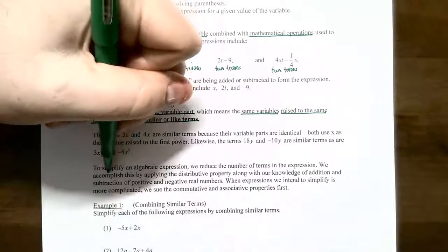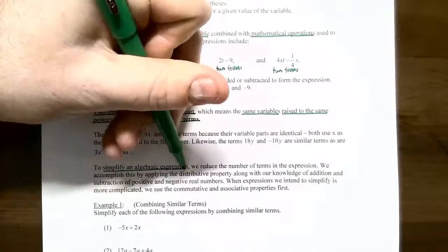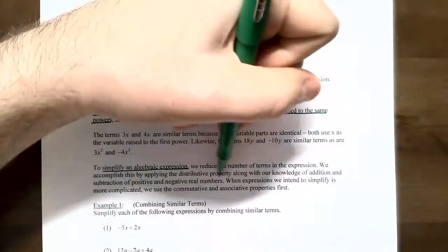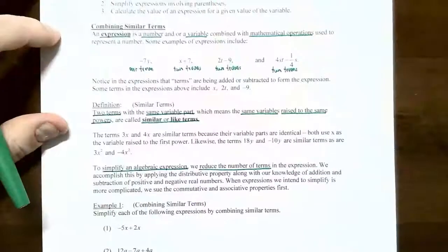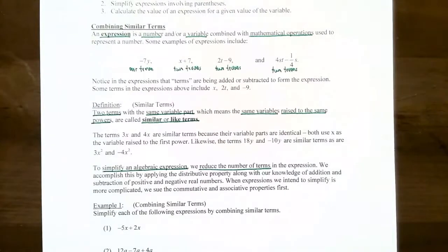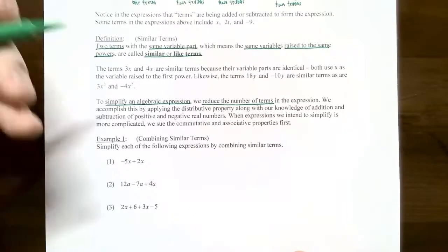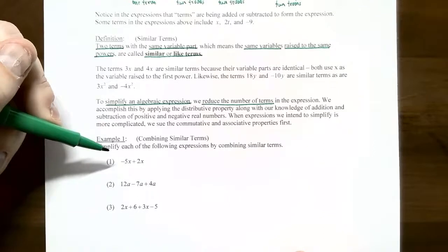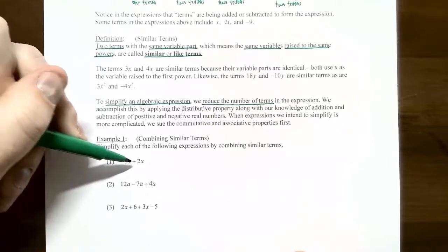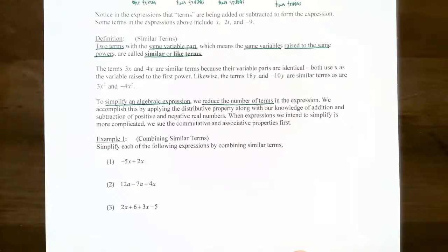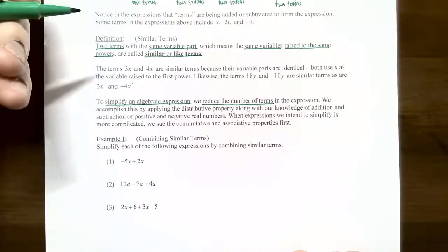To simplify an algebraic expression, we need to reduce the number of terms in the expression if possible. To do this, we're going to apply the distributive property along with our knowledge of addition and subtraction of positive and negative numbers from previous videos. Let's start with Example 1: combining similar or like terms. Simplify each of the following expressions by combining similar terms.